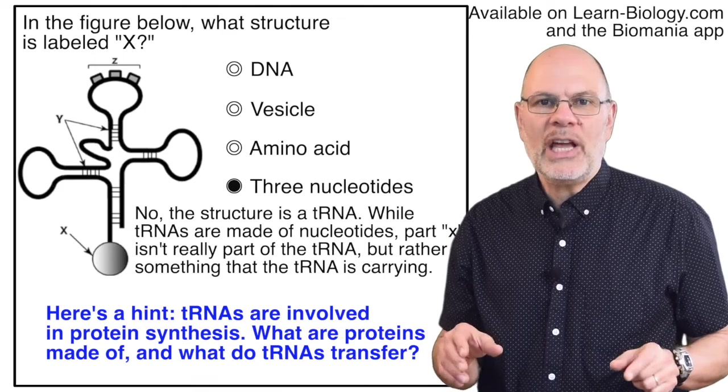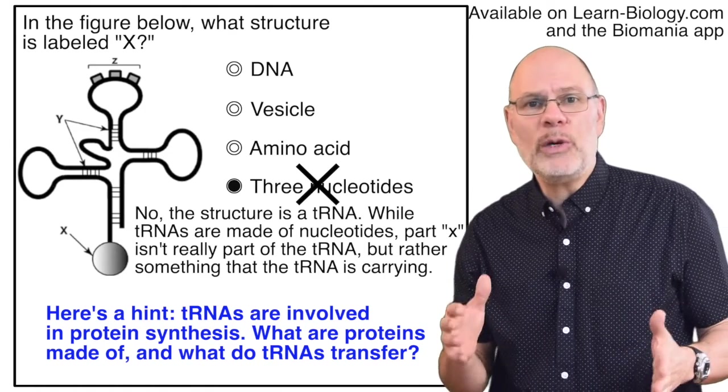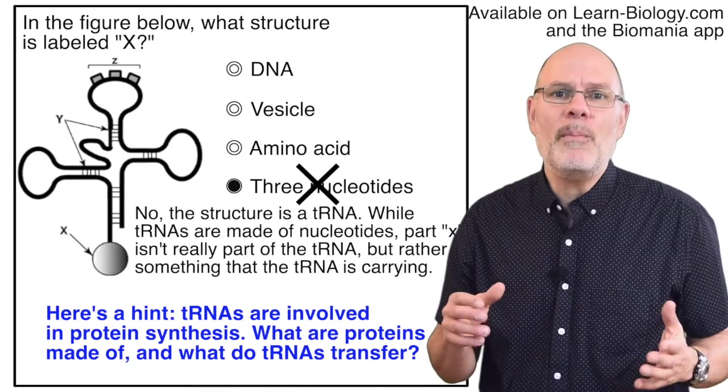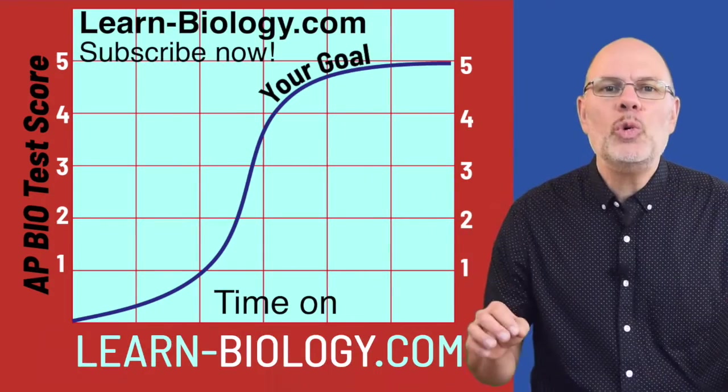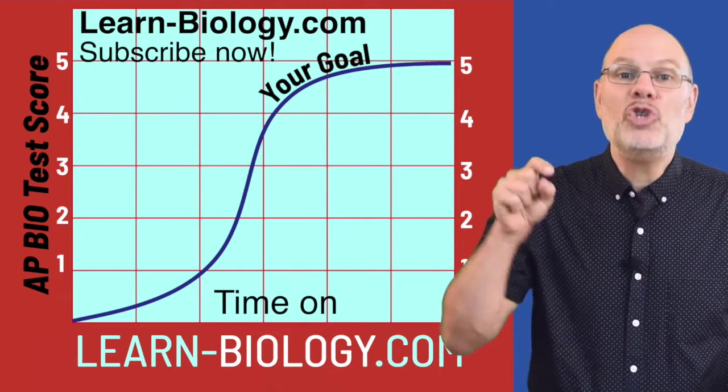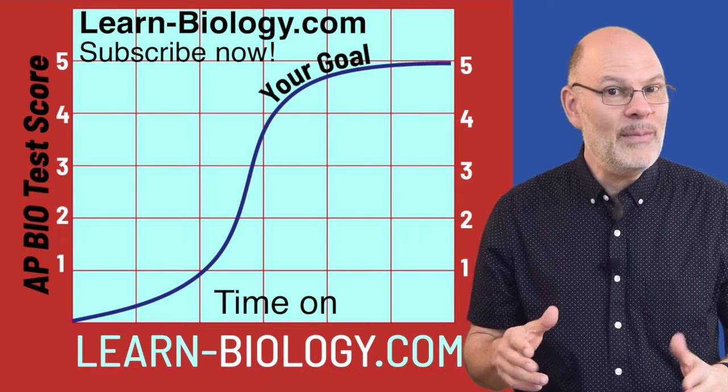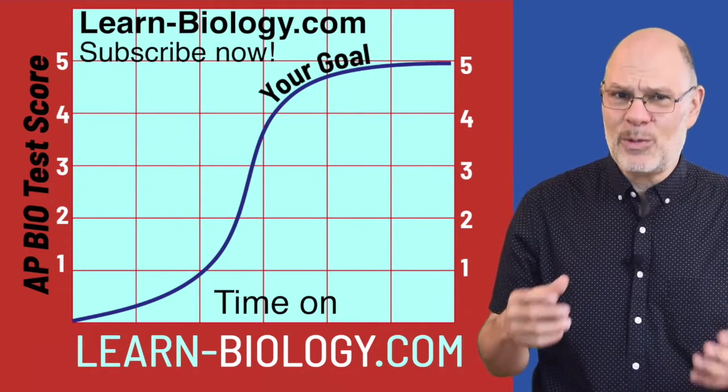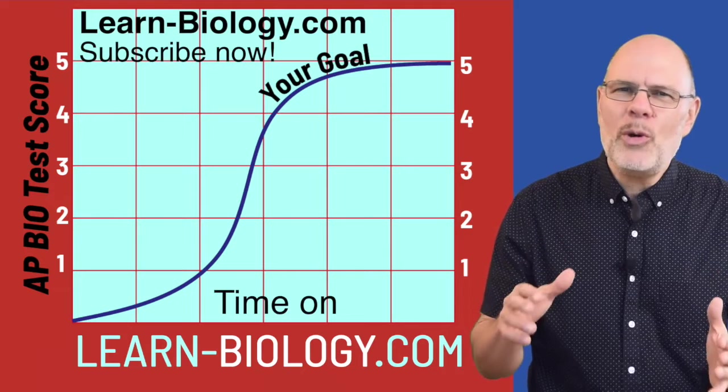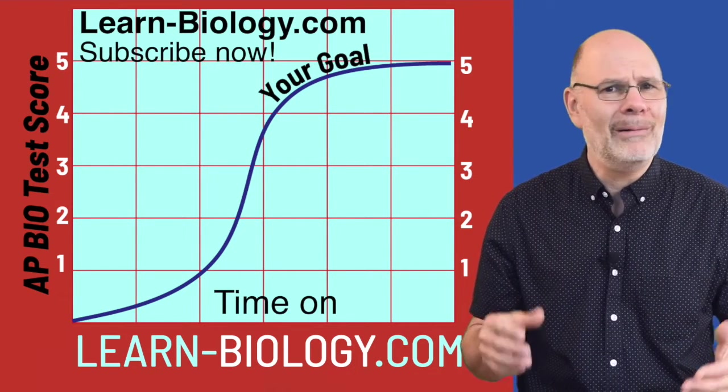When you see this question again, the worst-case scenario is that you'll remember that the answer isn't three nucleotides, and you'll give it your best shot from the three other choices. You can do this. You want that four or five. So just make a commitment to reviewing the right way. If you don't make that commitment, you're going to walk out of the test with a lot of regrets, because you'll know that you had the opportunity to really learn the biology that you needed to know, and you didn't.